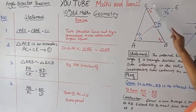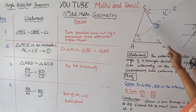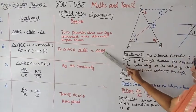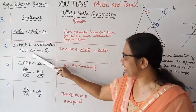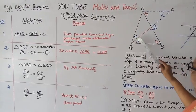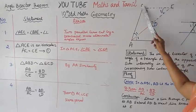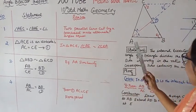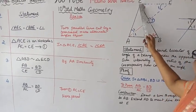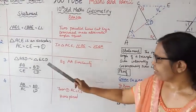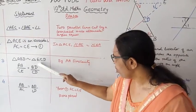Triangle ACE is isosceles, so AC = CE. Now, in similar triangles ABD and ECD: AB/CE = BD/CD, by AA similarity. That is how we prove AB/CE = BD/CD.